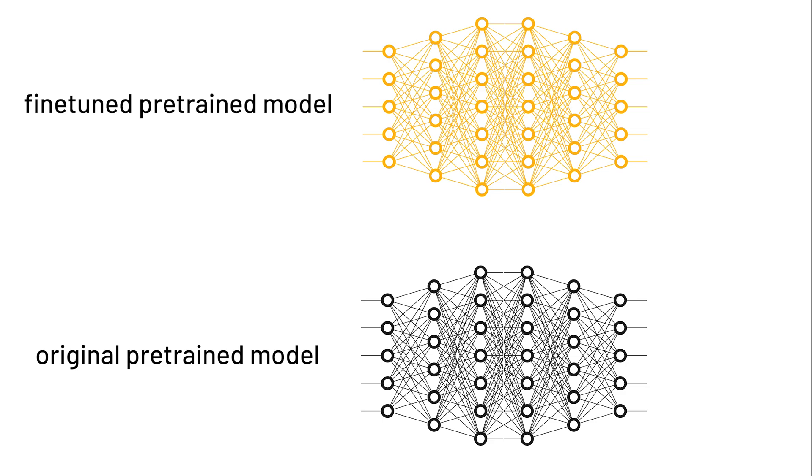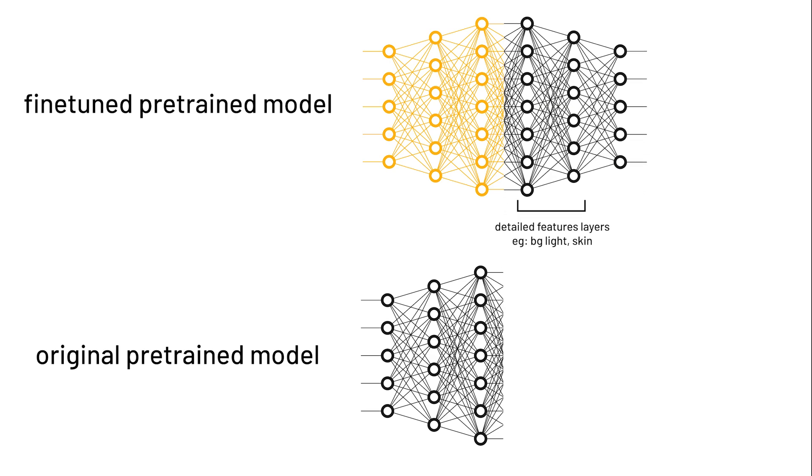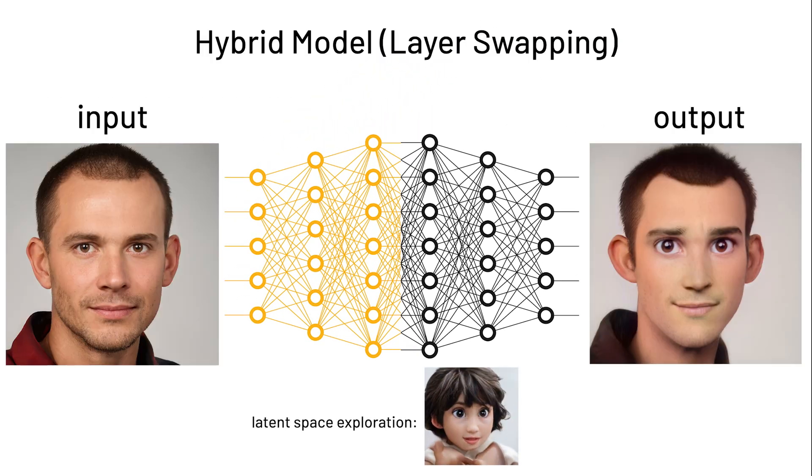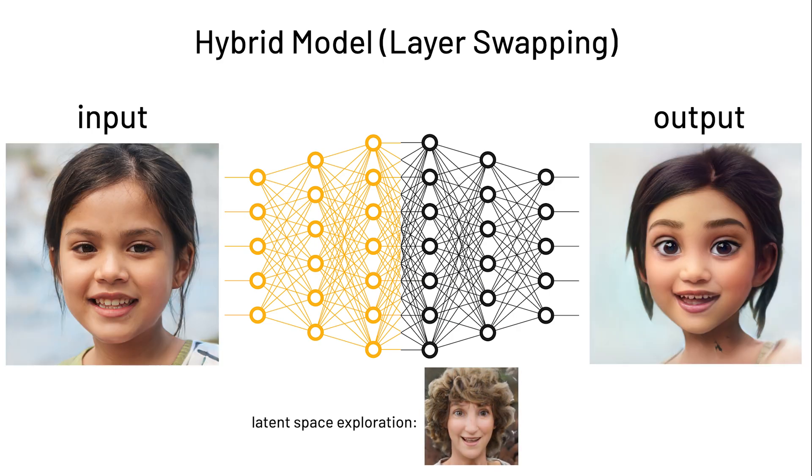they take out the layers that generate the basic cartoon features and combine it with the layers that determine the facial details and the background lighting from the original pre-trained model for normal faces, creating this hybrid model that can generate photorealistic rendering of cartoon faces.